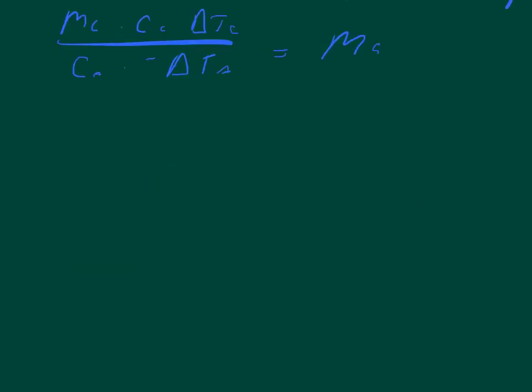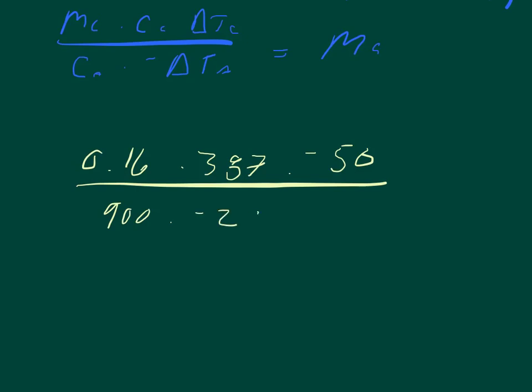And so all we got to do is substitute in our numbers at this point. So we have the mass of copper, 0.16 kilograms, times the specific heat of 387 joules per kilogram Celsius times the change of temperature, which is negative 50, divided by the specific heat of aluminum, 900 joules per kilogram Kelvin, times the negative change of temperature. The change was positive 20, so negative 20.